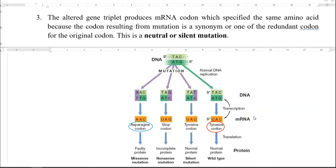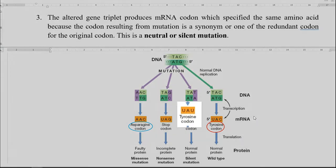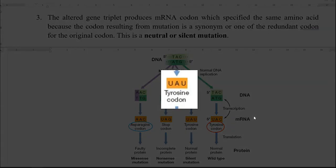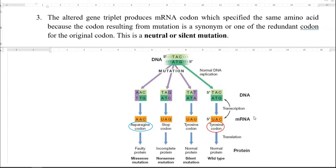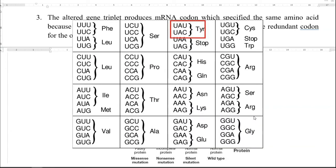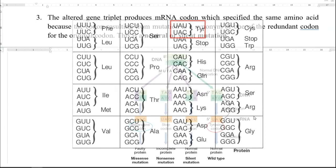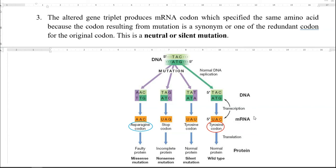The next type is a neutral or silent mutation. The altered gene triplet produces an mRNA codon that specifies the same amino acid, because the codon resulting from the mutation is synonymous to the previous codon — it is one of the redundant codons for the original codon. This results in a neutral or silent mutation, where a mutation is created but the amino acid specified by the mutant sequence is still the same. So it can be referred to as a mutation that occurs silently.